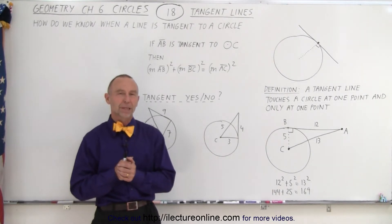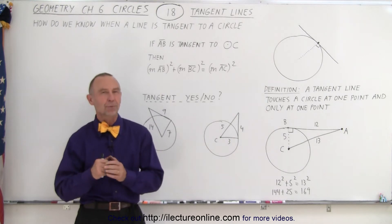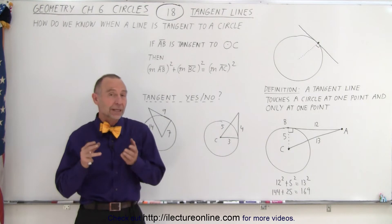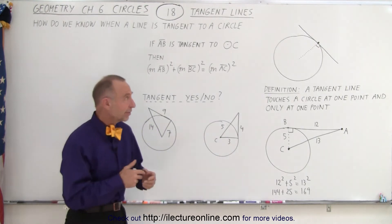Welcome to Electron Line. Lines that are tangent to a circle have some unique properties, and with those unique properties, we can actually determine whether or not the line is actually tangent or not. So let's take a look.